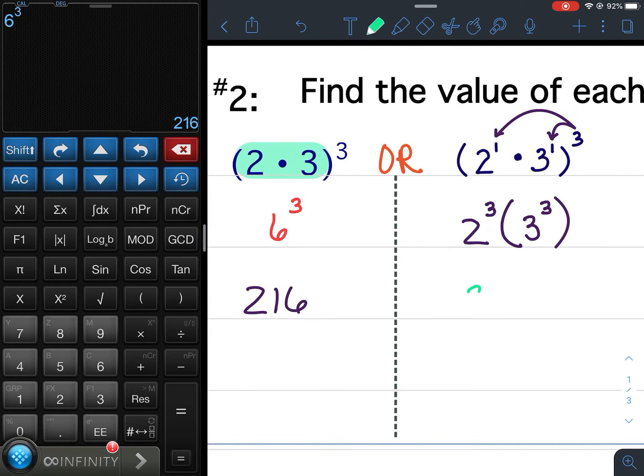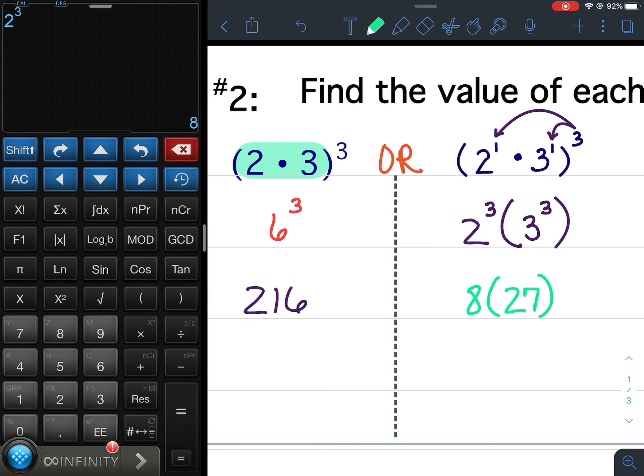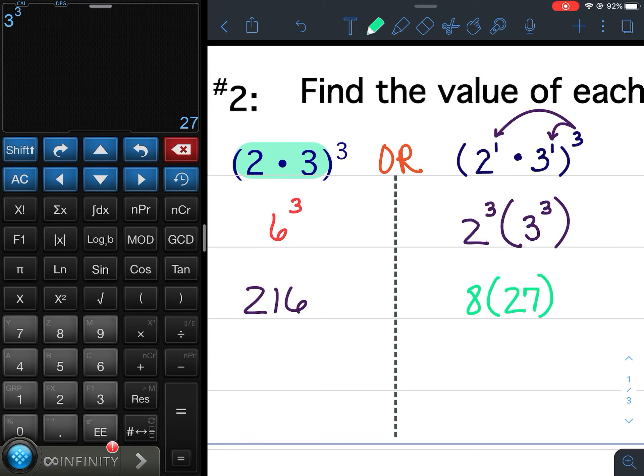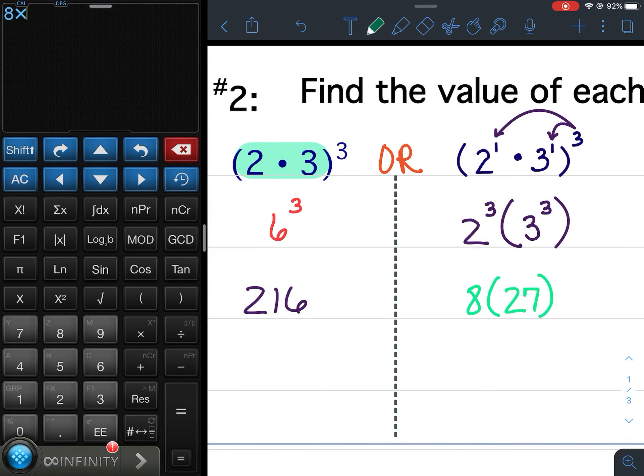2 cubed is 8, 3 cubed is 27. So now I'm going to take those and I'm going to multiply them together. So 8 times 27, I get 216. So I get the same thing.